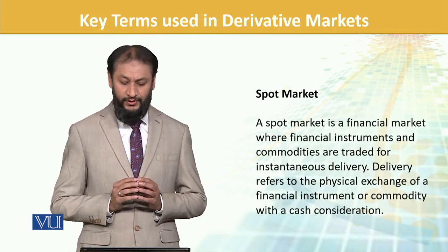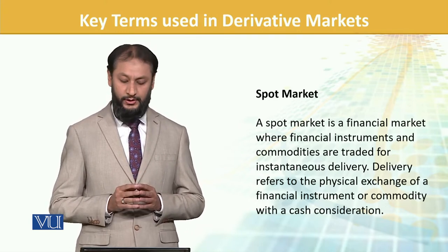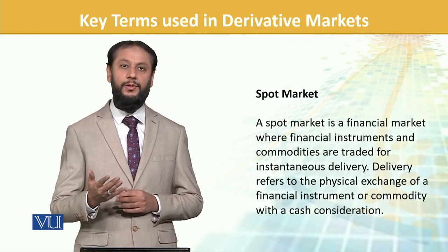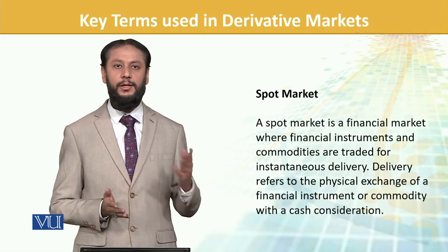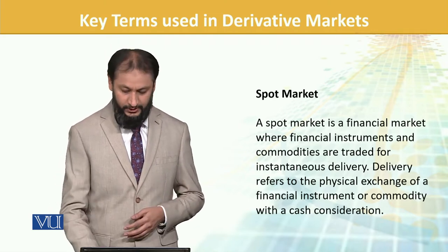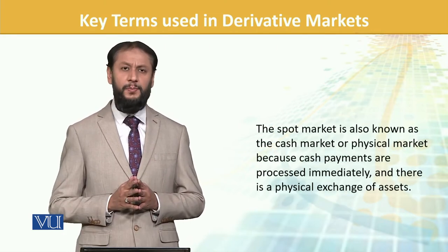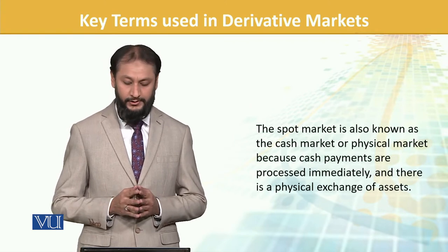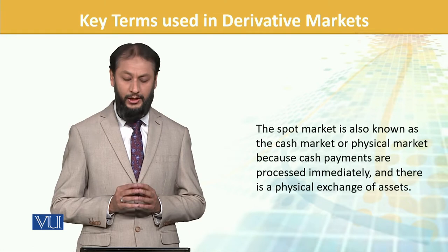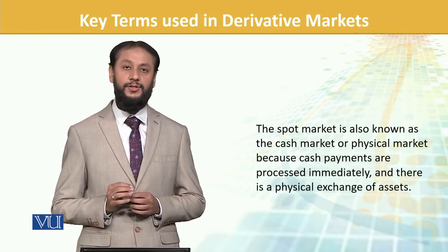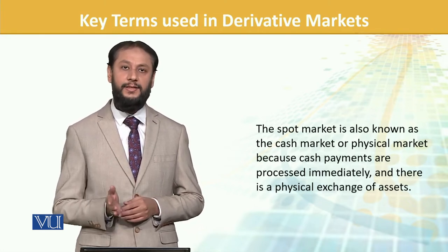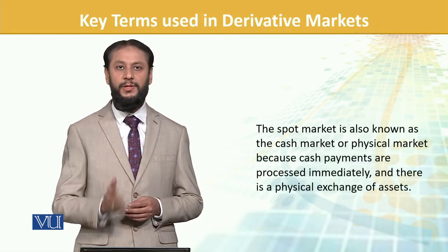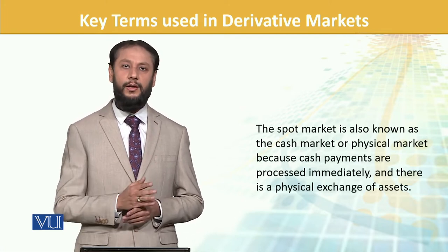Delivery refers to the physical exchange of financial instruments or commodities with cash. You will have payments and you will actually get the delivery of the underlying product. The spot market is also known as the cash market or physical market because cash payments are processed immediately and there is a physical exchange of assets — assets actually change hands from one to another.